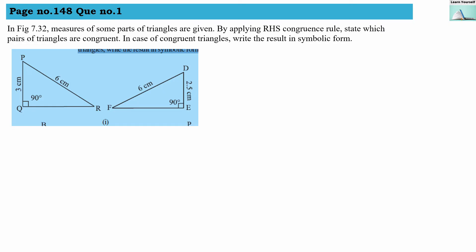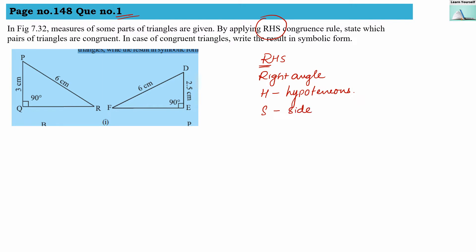Welcome to Learn Yourself. We will solve sums from page number 148, question number 1. In figure 7.32, measures of some parts of triangles are given. By applying the RHS congruence rule, we will state which pairs of triangles are congruent. RHS stands for Right angle, Hypotenuse, and Side. Two triangles must have a right angle, equal hypotenuses, and one equal side other than the hypotenuse.